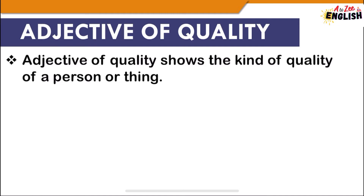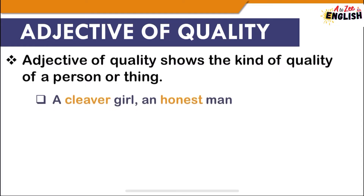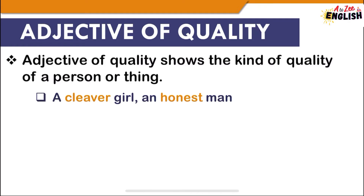Adjective of quality shows the kind or quality of a person or thing — they describe the quality of a noun or pronoun. For example, 'a clever girl' and 'an honest man' — here, clever and honest describe the quality of girl and man. Adjective of quality generally answers the question 'of what kind.'